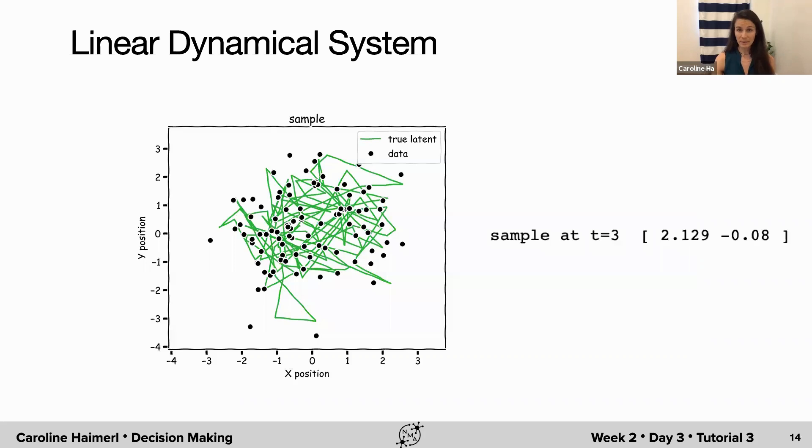Once you implemented the sampling, you should have obtained something like this here in the graph. We have in green a latent trajectory and in black the data points that reflect this trajectory but are noisy. The exact values for the third sample given a random seed of zero should be 2.129 for the first dimension and minus 0.08 for the second dimension.